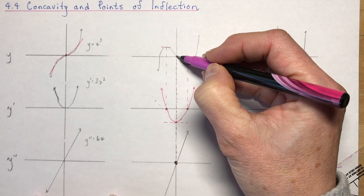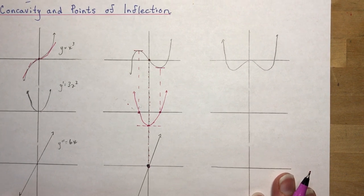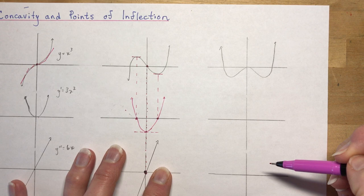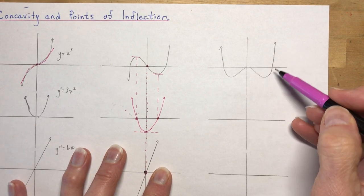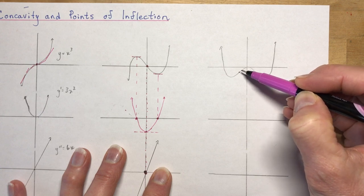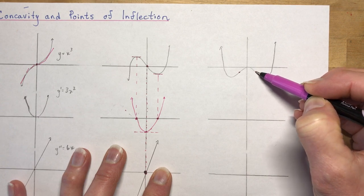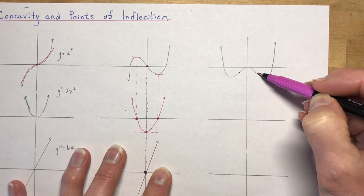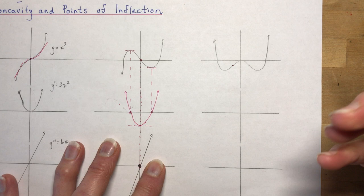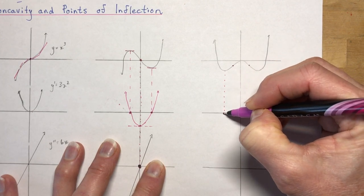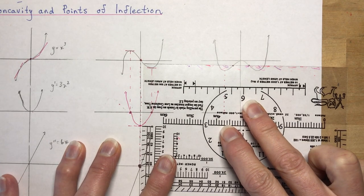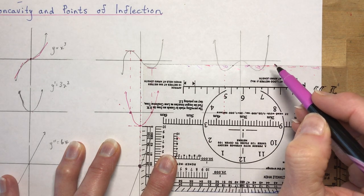What's important here is that this point — which was a point of inflection on the original function — became a minimum on the first derivative, but on the second derivative became a zero. So if you set the second derivative equal to zero, you will be able to solve for the point of inflection. Let's look at a quartic function because that will make it even more clear since we have a few points of inflection on this curve.